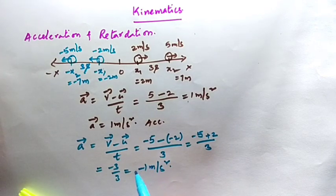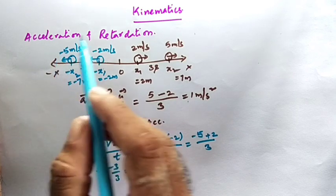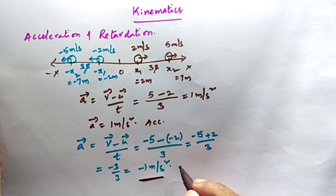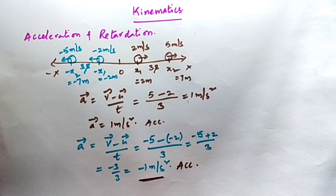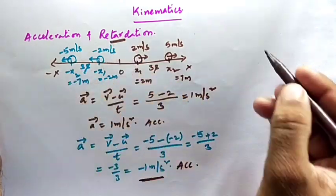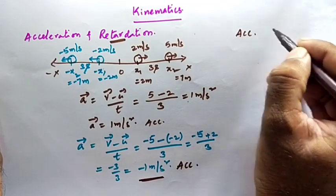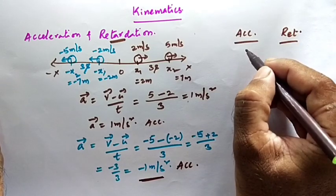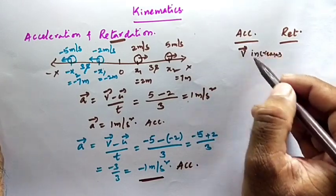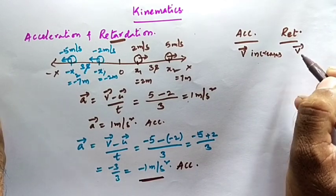The acceleration of the body is −1 meter per second squared. Now, is this accelerated motion or retardation? We got a negative acceleration — does that immediately mean retardation? No. Let me explain in a simple manner: when can you say the body is accelerating, and when can you say the body is retarding? If the velocity of the body increases, that is accelerated motion. When the velocity of the body decreases, it is called retardation.